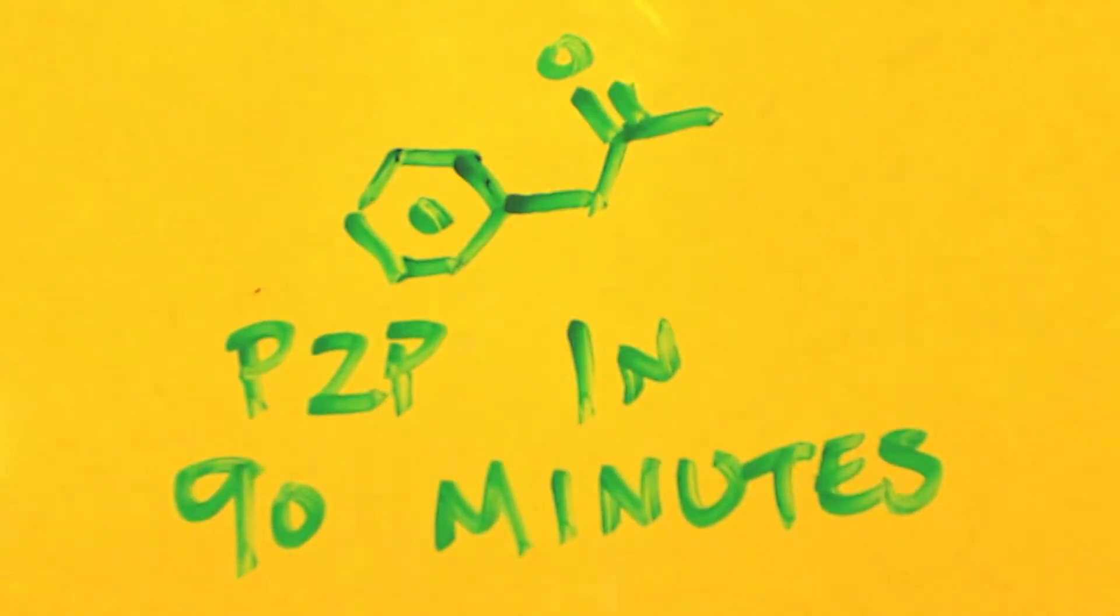This is John Black Super Chemist JBSC, part two of the manganese(III) acetate coupling reactions. This one example is making P2P. I can do it in 90 minutes, we're gonna get into those instructions right now.